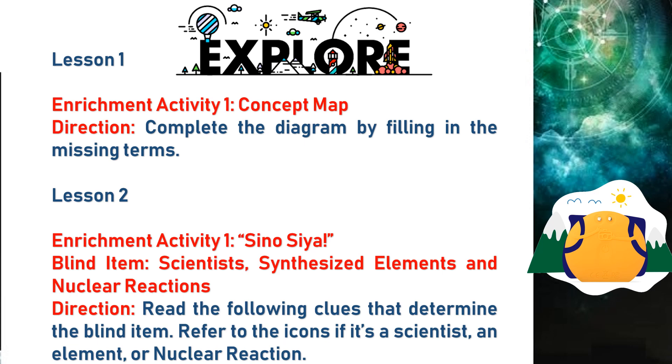For explore in page 9 and 14, here are some enrichment activities for you to work on to master and strengthen the basic concepts you have learned from this lesson. For Lesson 1, Enrichment Activity 1, Concept Map. Complete the diagram by filling in the missing terms. Lesson 2, Enrichment Activity 1, Synthesis. Blind Item, Scientist, Synthesize Elements and Nuclear Reactions. Read the following clues that determine the blind item. Refer to the icons if it's a scientist, an element, or nuclear reaction.